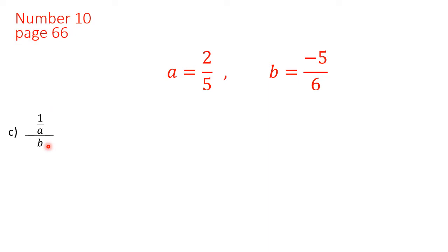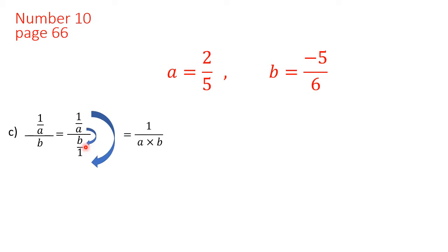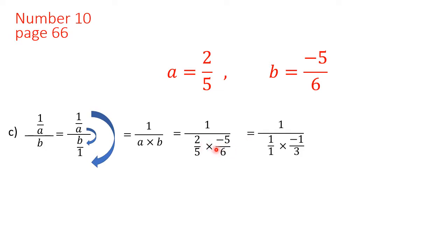In part c we are asked to find the value of 1 over a over b. As before, it is easier to simplify first. We write b as b over 1, giving a fraction over a fraction — the form of a complex fraction. We multiply the closest by each other: 1 times 1 equals 1, and a times b equals a times b. Now we substitute a and b, giving 1 over 2 over 5 times 5 over 6. We simplify: 5 and 5 cancel, and 2 and 6 reduce to give 3.